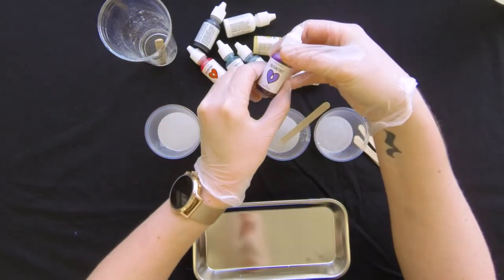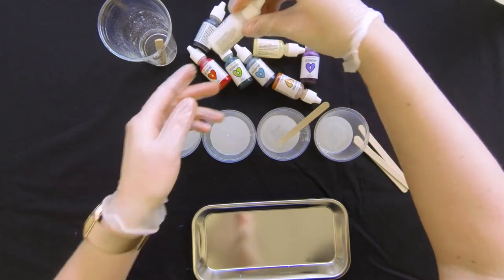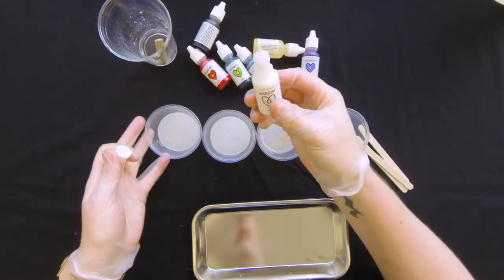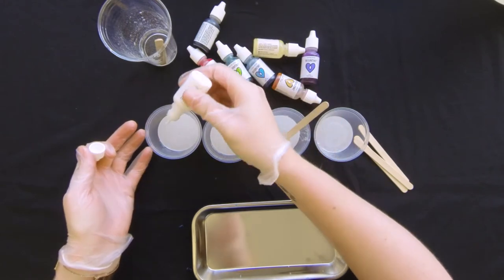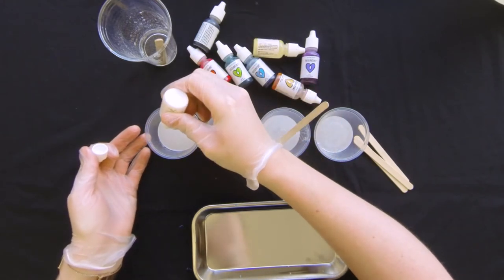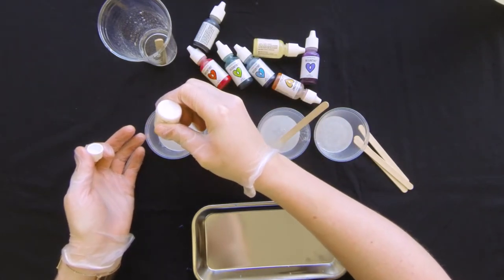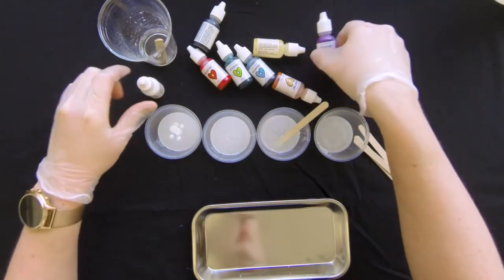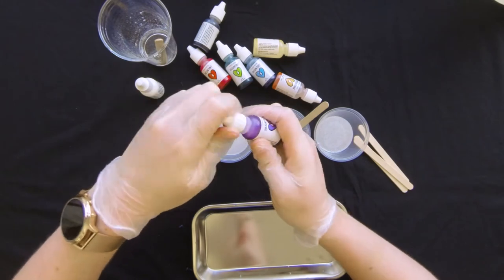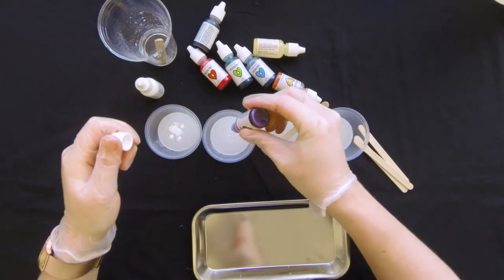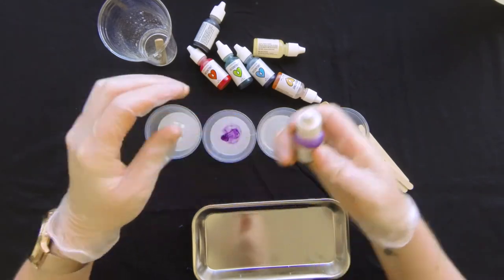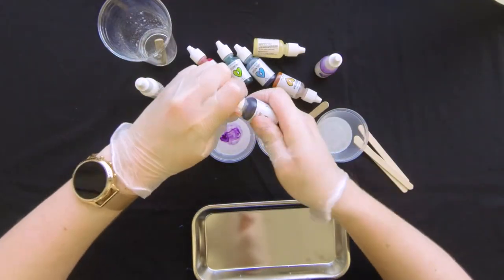All right. So the resin tints that we have, we have several different colors. I'm going to start with a little bit of white in this one on my far left, maybe about 10 drops. A little bit goes a long way here. And then I wanted to, I think I'm going to do something, some pretty purple today. And I want a really dark purple. So I'm going to add some black in there too.